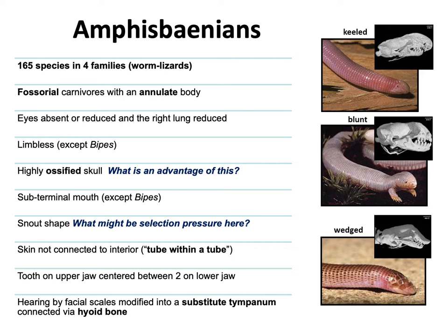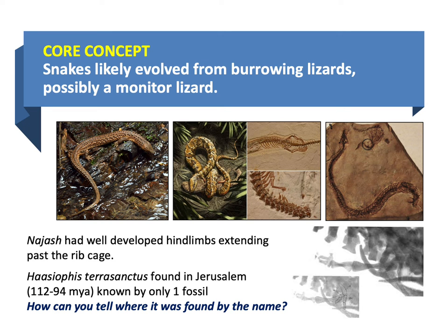Let's get back to how we started this whole thing: snakes. Where did snakes come from? Snakes probably underwent the same selective pressures as amphisbaenids in that they had to burrow in the ground and limbs became useless as a result. They most likely evolved from a lizard with a particular fossorial lifestyle — a burrowing lizard of some kind.